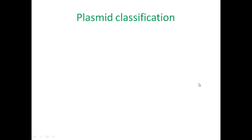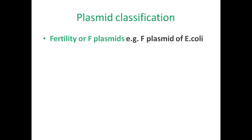Let us look at plasmid classification. The first kind is fertility plasmid, or F plasmid. These are responsible for conferring the property of conjugation to the bacterial cells. An example is the F plasmid of E. coli.